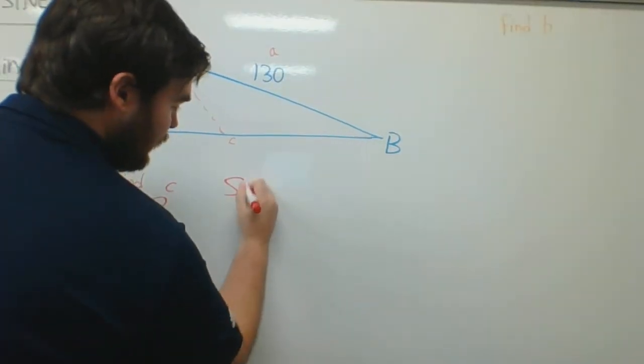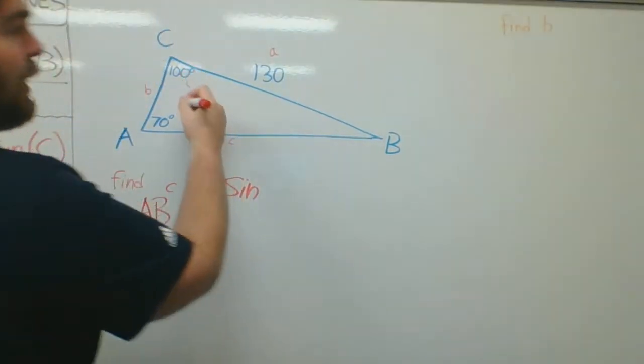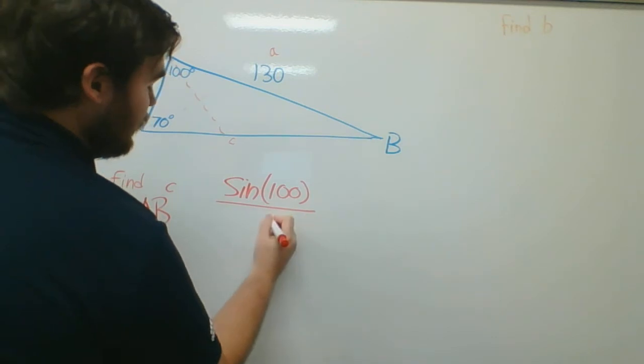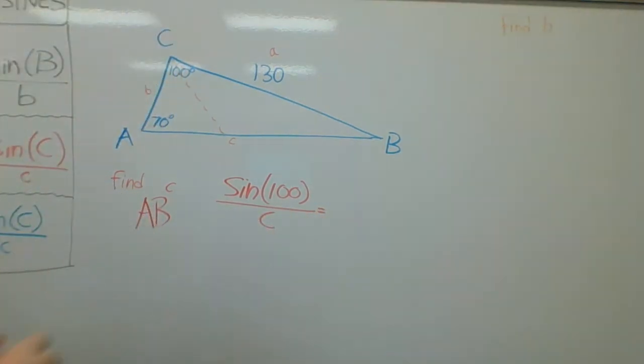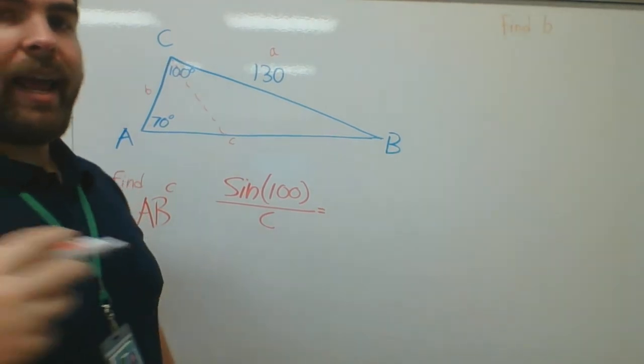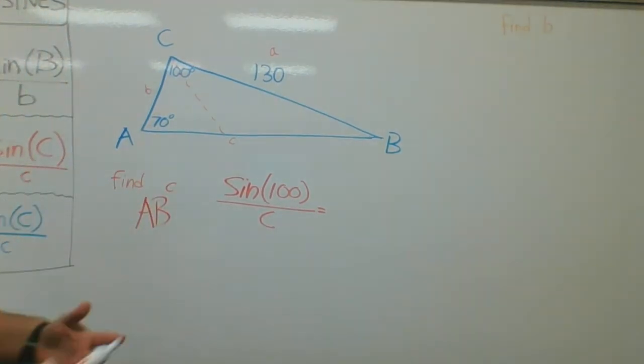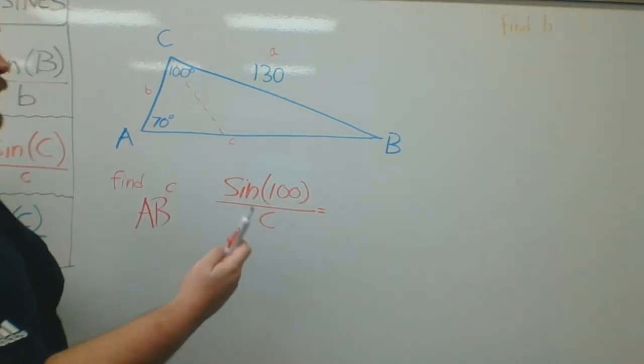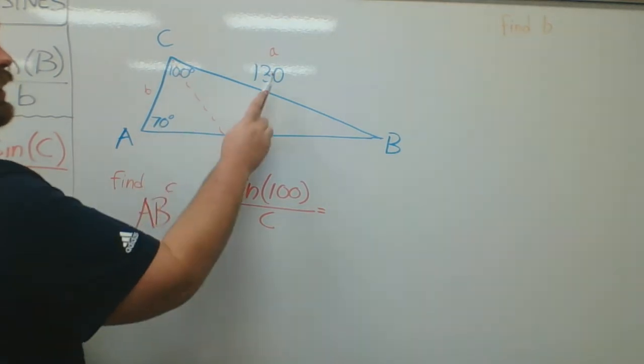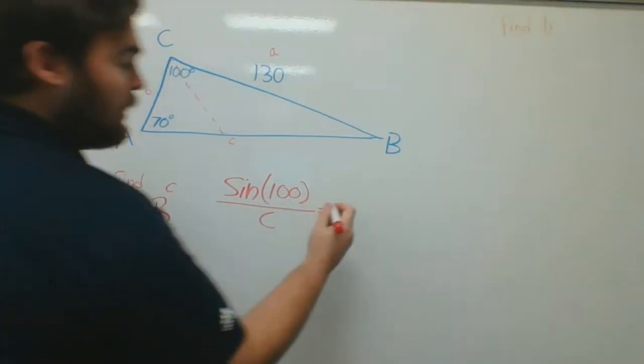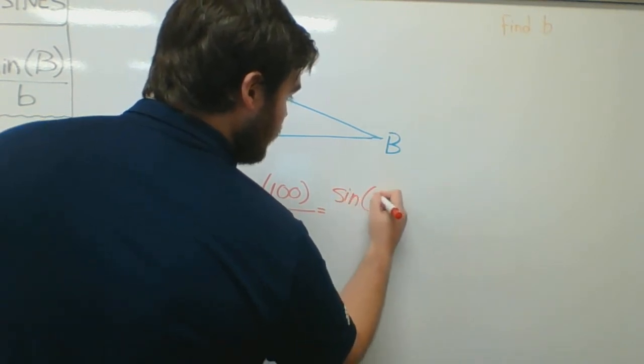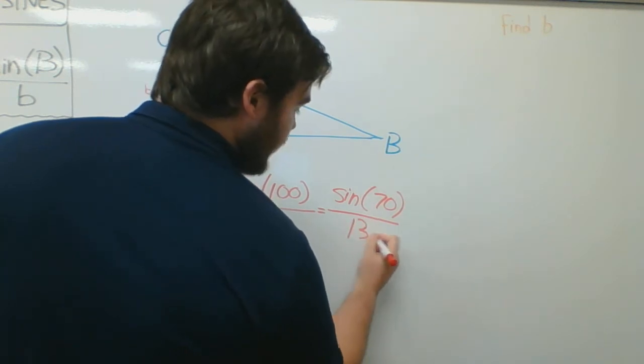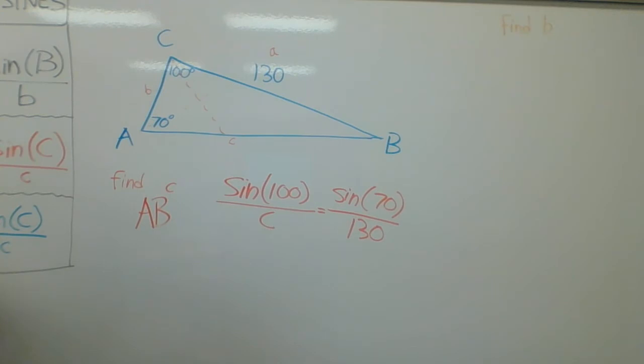So I can start setting this up. I'm going to say sine of capital C. Sine of capital C would be sine of 100. Sine of 100 over lowercase c is equal to, I want to set up something that has a ratio. I don't know capital B. I don't know lowercase b right now. So I'm going to use capital A. I know the angle. Lowercase a, I know the sideline. So I can set this up. Sine of 70 degrees over 130, the sideline. Sine of the angle over sideline.